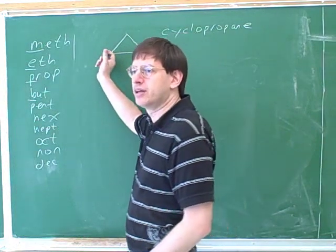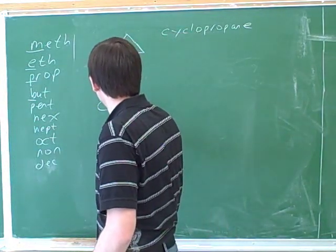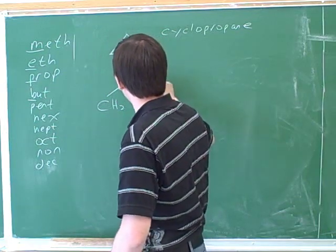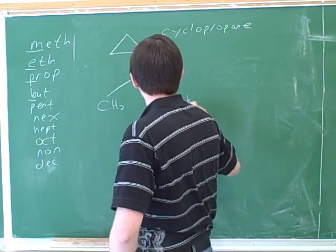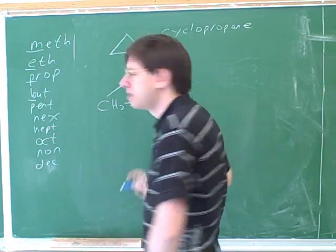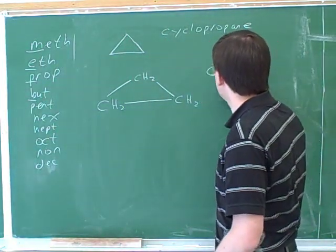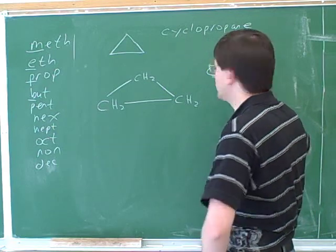How many hidden hydrogens are on this carbon? Two. And how many on this carbon? Two. And two here. So this would be the way to write this showing all the hydrogens. So the formula for this is C3H6.